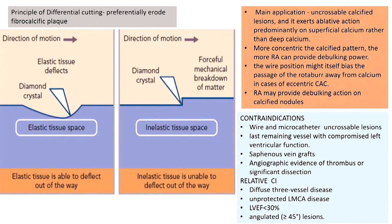Rotational atherectomy follows the principle of differential cutting — it only acts on non-compliant tissues while soft compliant tissues move away, so it does not damage the normal layers of the blood vessel. The main application is uncrossable calcified lesions, and it exerts ablative action predominantly in the superficial calcium rather than deeper calcium. The more concentric the calcified pattern, the better the debulking. Wire position is important because wire bias helps in ablation of very eccentric calcium.